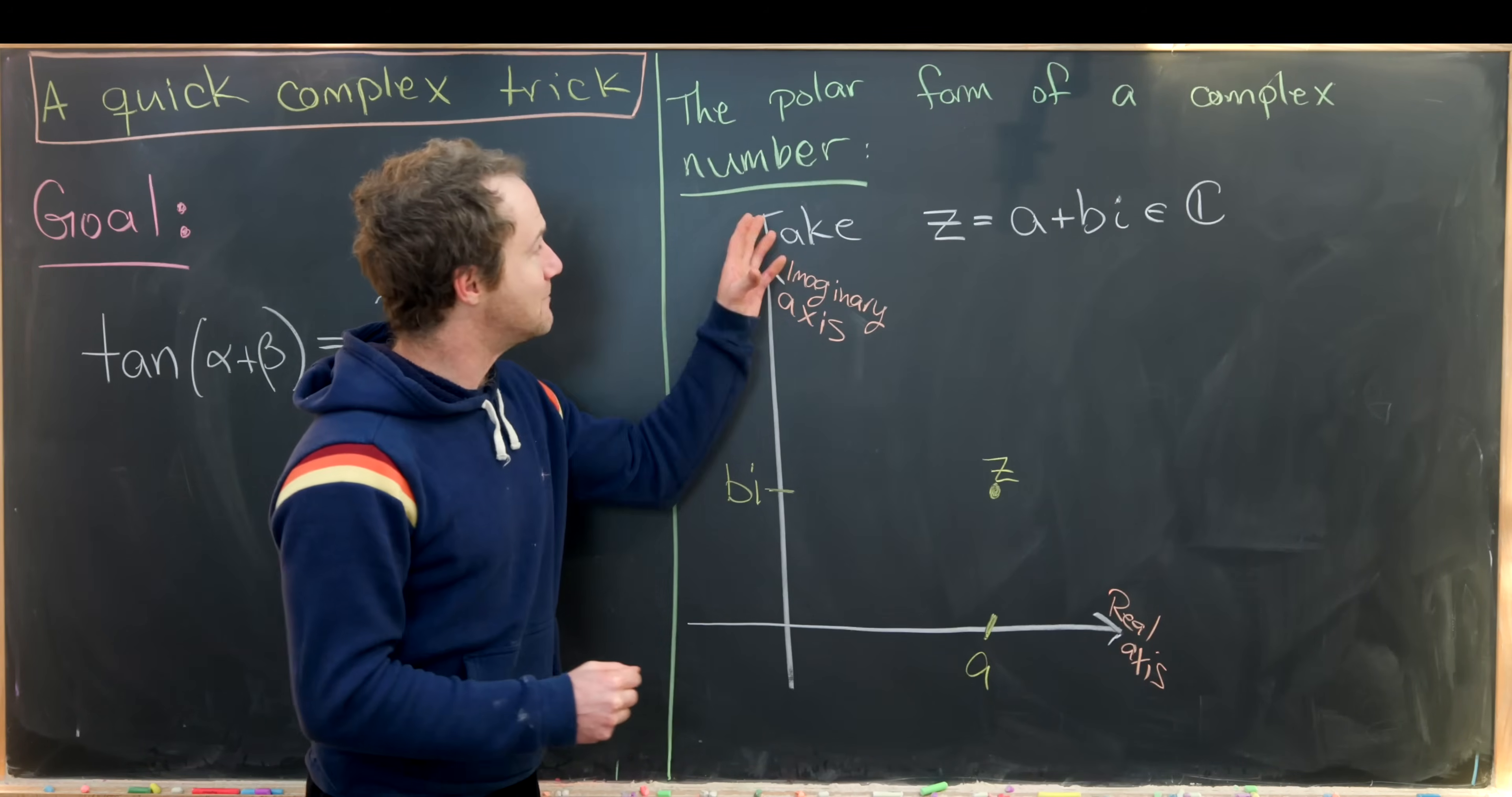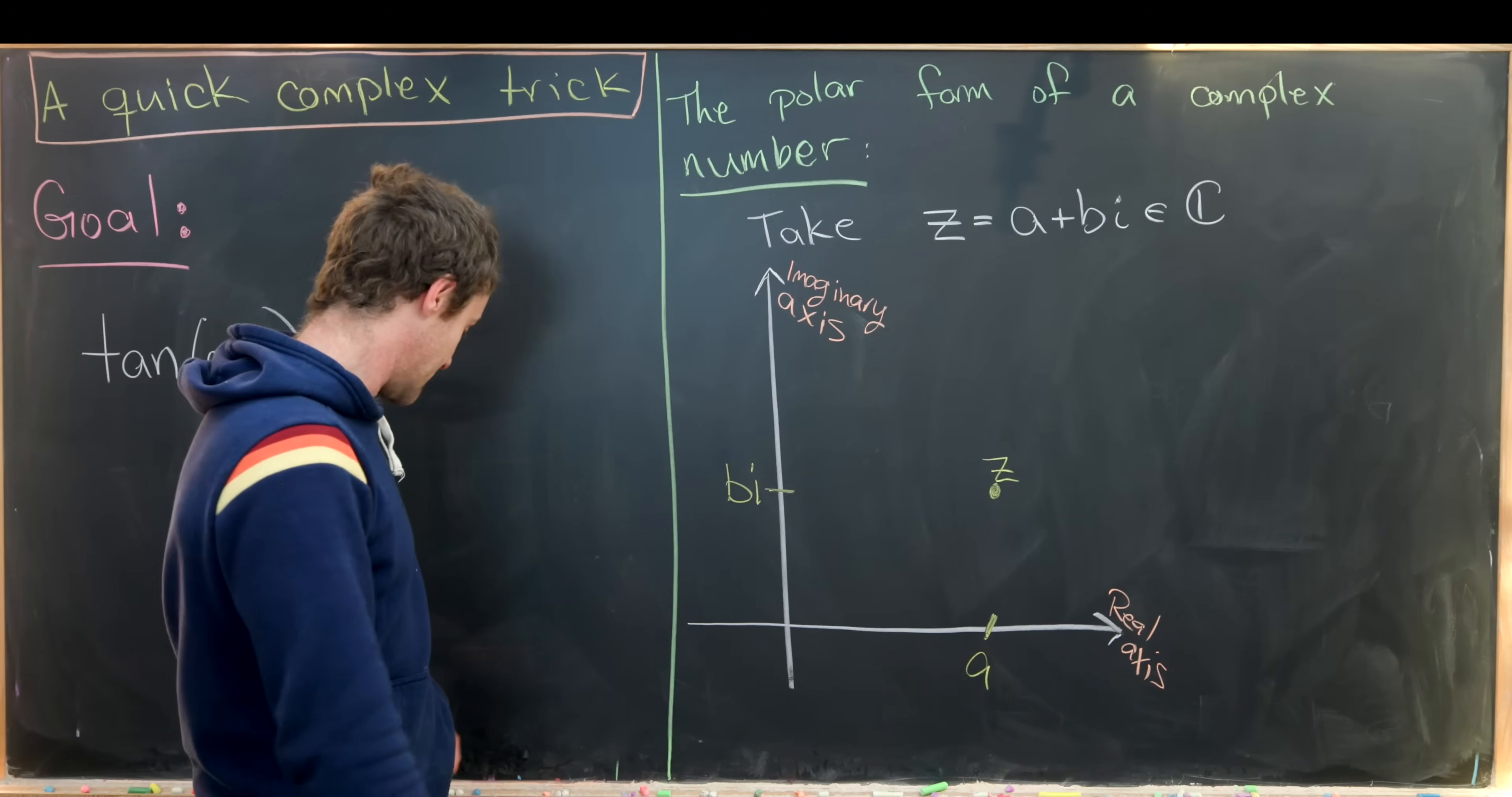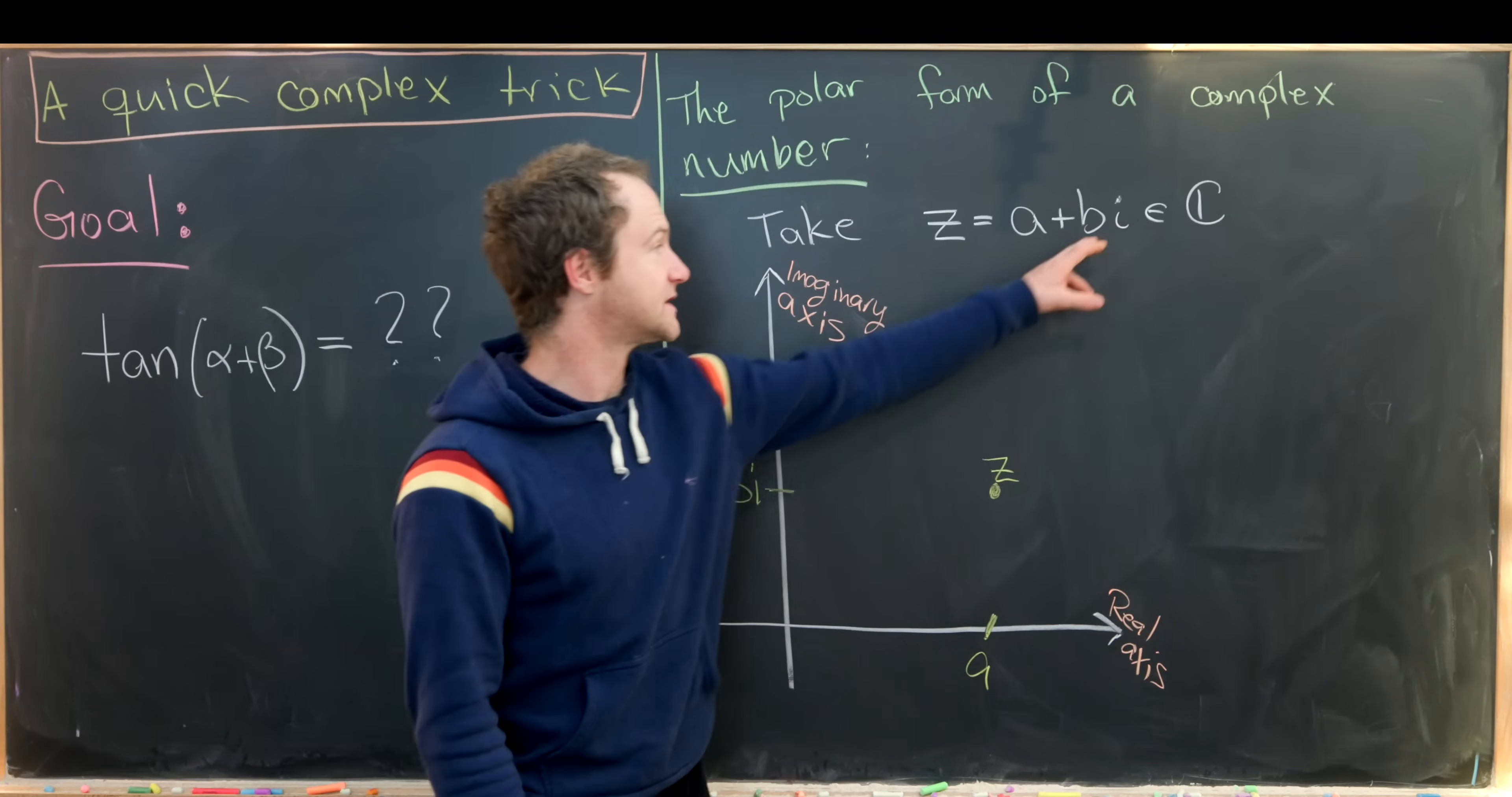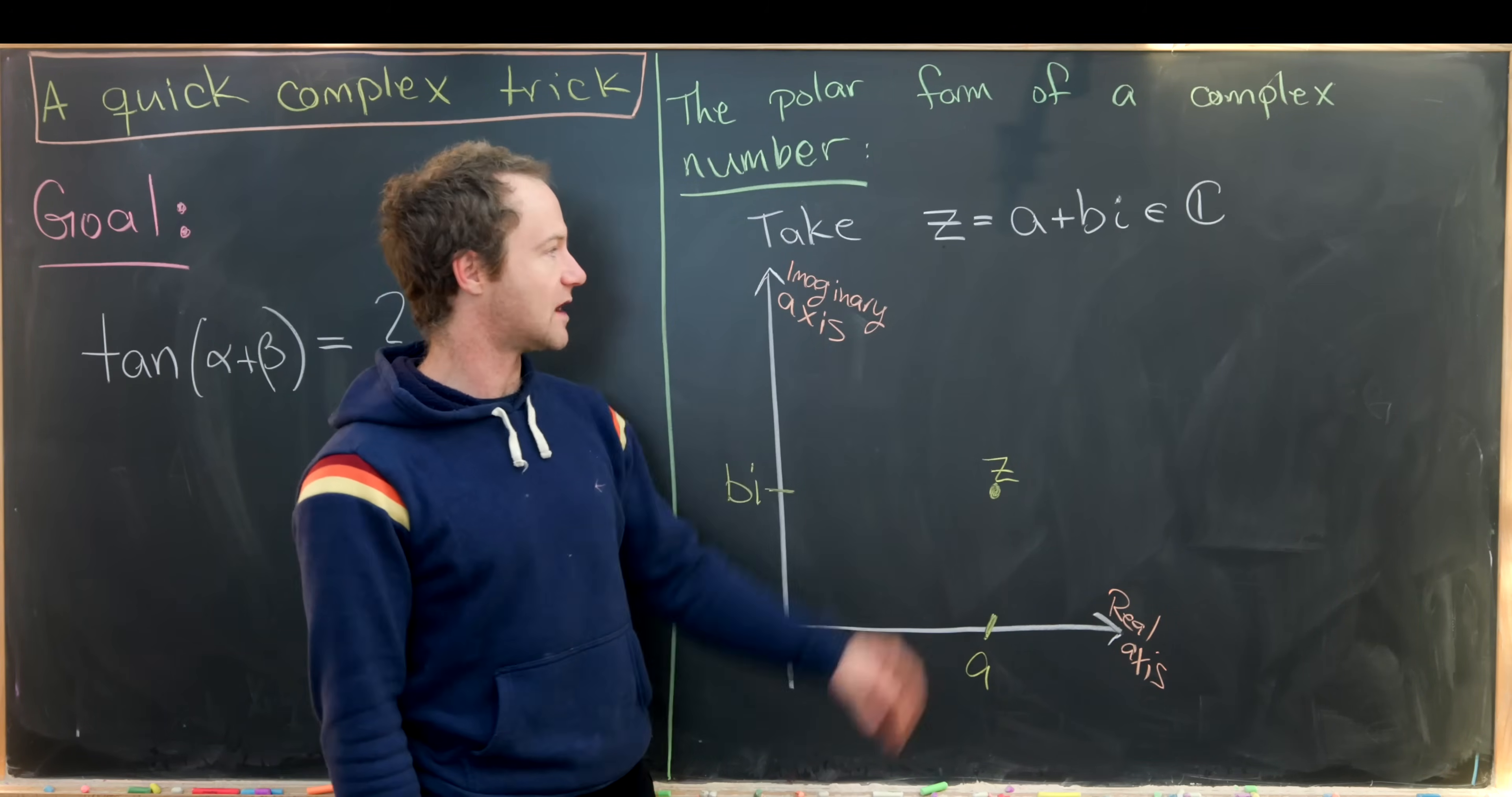Okay, so our main tool will be the polar form of a complex number. So let's build that up. Let's suppose we've got a complex number of the form a plus bi, where a and b are real numbers, and i is our imaginary number. In other words, the square root of negative one. I call this complex number z.